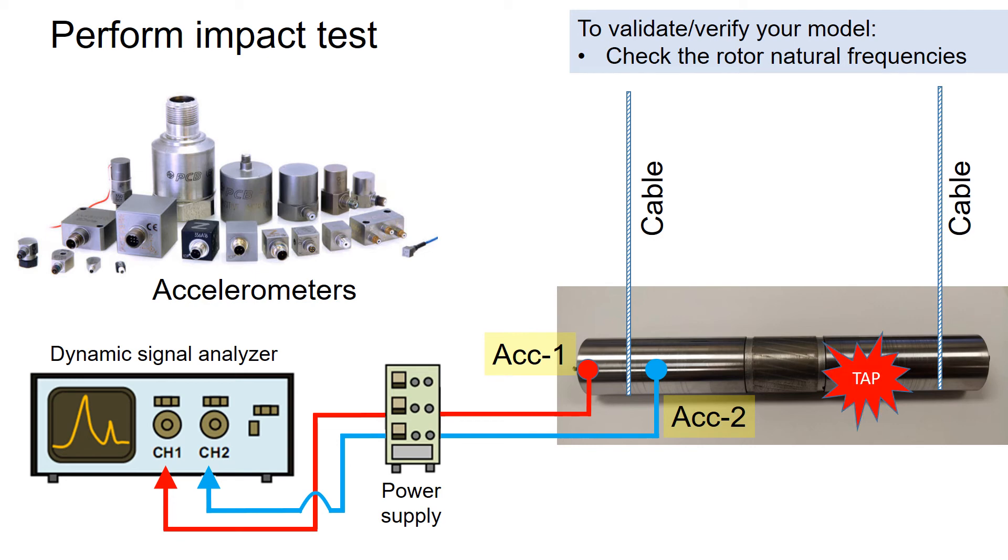Now connect the accelerometer to the power supply and then to the signal analyzer. After all the equipment is ready, tap the rotor gently and record the measurements. If you are measuring the mode shape, you will need to repeat the impact test with the change in location of the accelerometer.